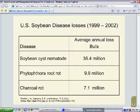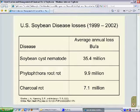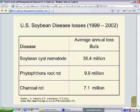Charcoal rot is one of the most serious diseases of soybeans in the United States. Each year, plant pathologists record disease loss estimates for all of the major diseases. In the most recent summary, which covers from 1999 to 2002, charcoal rot is the number three disease pest with regard to bushels lost on an annual basis. The number one pest being soybean cyst nematode at 35.4 million bushels per acre across the United States, followed by Phytophthora root rot at 9.9 million bushels, and then charcoal rot at 7.1 million bushels.